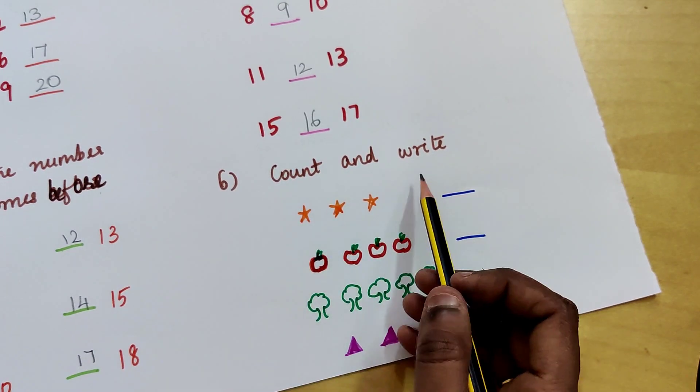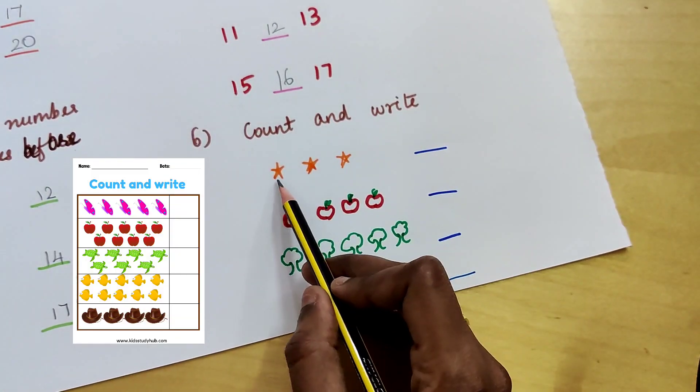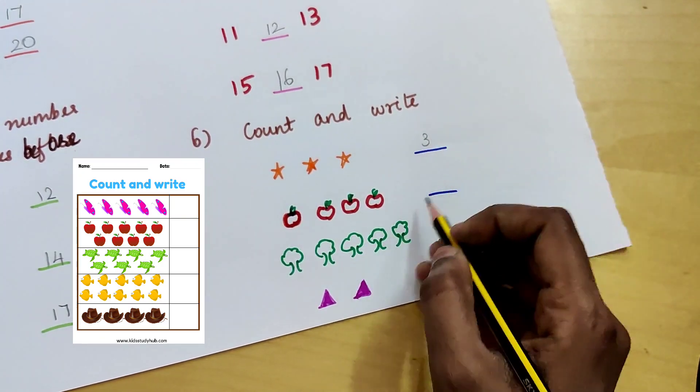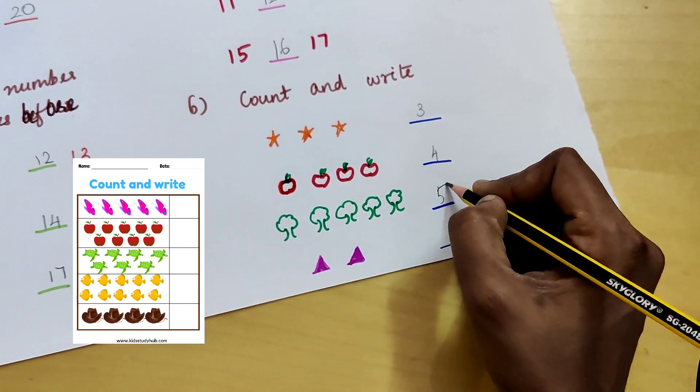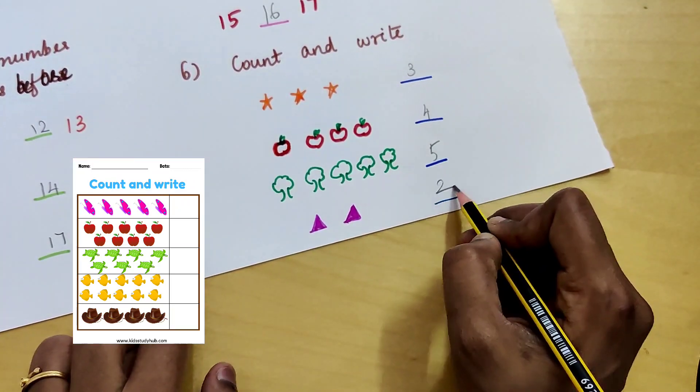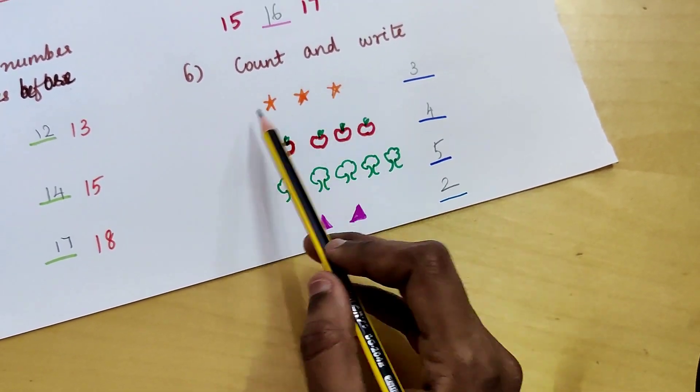Then questions on counting. They have to count and write. 1, 2, 3, 4 apples, 5 trees and 2 triangles. So teach them to point and count.